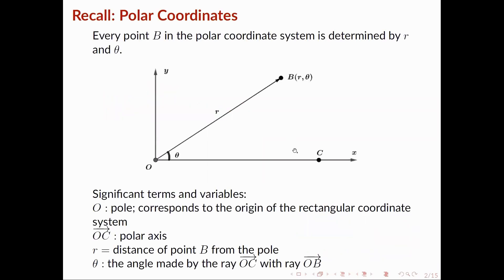Recall of concepts — some significant terms and variables. In the polar coordinate system, we have the point O, which is the pole, and this corresponds to the origin of the rectangular coordinate system. We also have the ray OC, which is the polar axis, and this is analogous to the x-axis of the rectangular coordinate system. We also have R, which is the directed distance of a point from the pole. And we have the angle theta, which is the angle made by the ray OC with the ray OB. Every point B in the polar coordinate system is determined by R and theta.